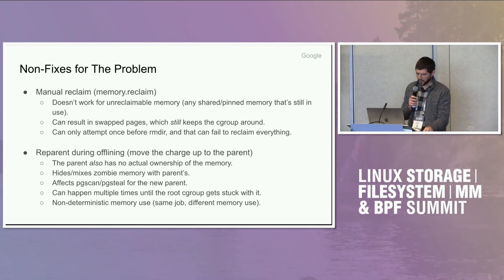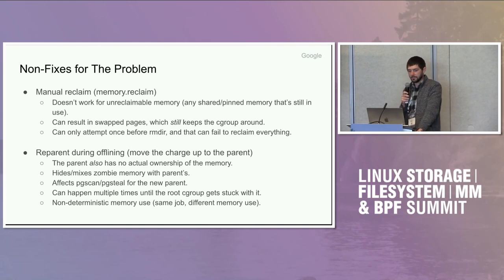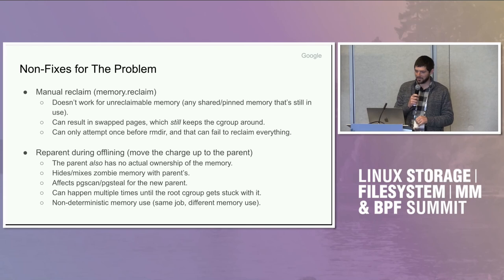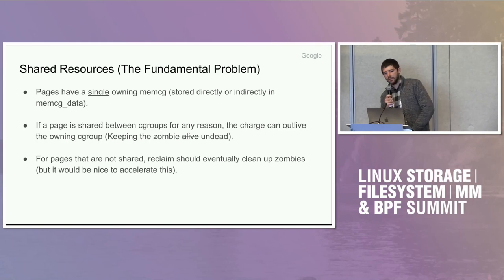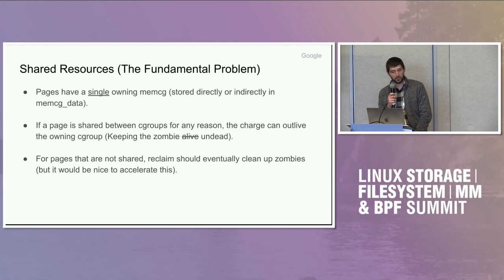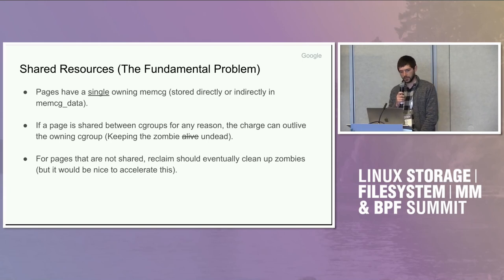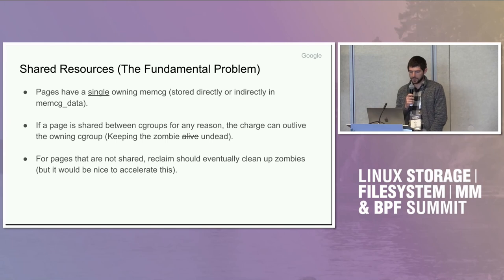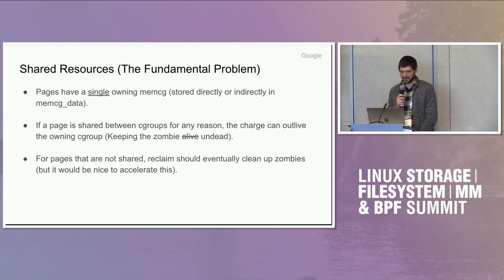The other issue with this is that the same workload can result in different memory charges. You run the same workload twice in two different cgroups, and because of the non-deterministic way the memory gets charged, the actual page counter is not the same each run. I think the fundamental issue is that struct page can only reference one memcg owner, when in fact the page can be referenced by arbitrarily many owners. The memcg data field of struct page — or struct folio — has that info. So any time a page is shared between cgroups for any reason, the charge on the cgroup can outlive the owning cgroup. That's what keeps the zombies alive.